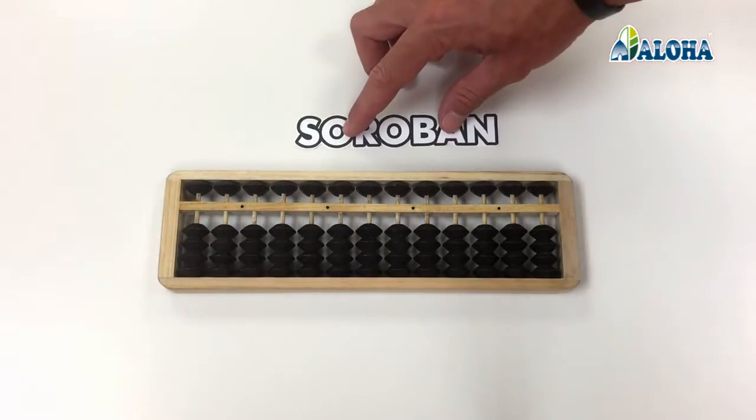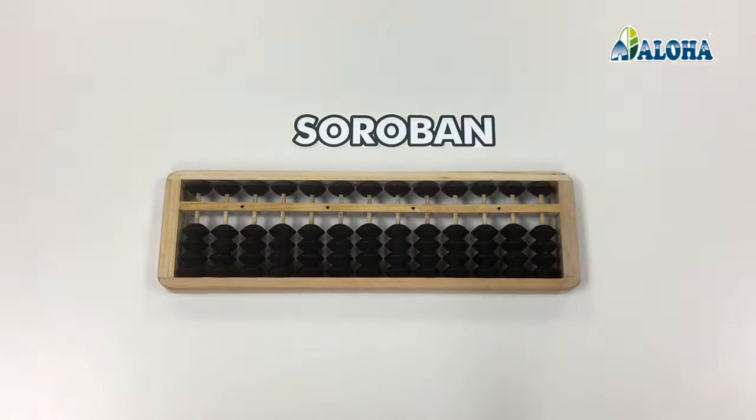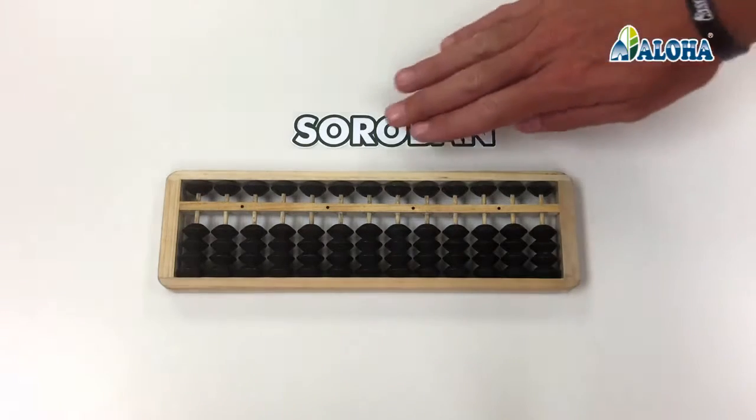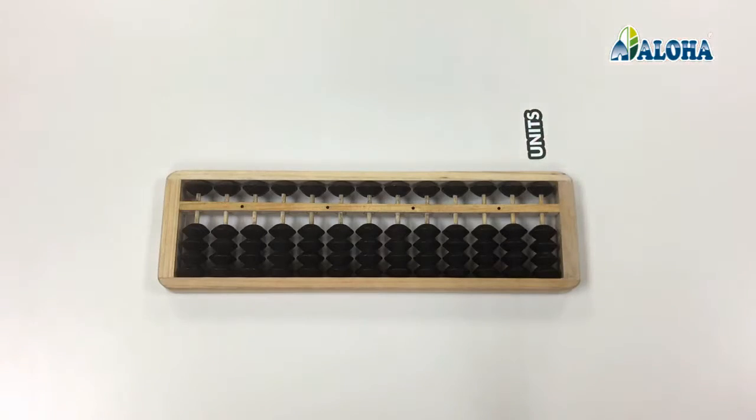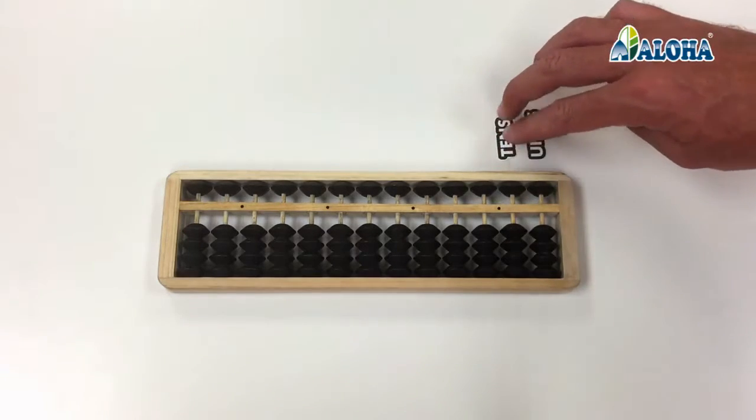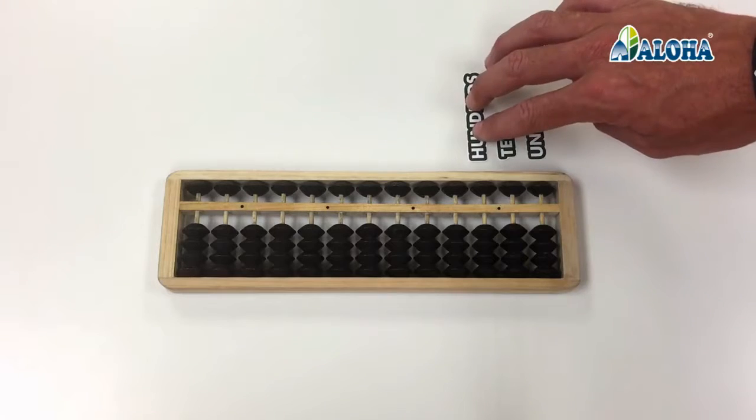The abacus is divided into columns. Each column corresponds to a numerical position. In this way, the first column represents the units, the second column represents the tens, and the third column the hundreds, and so on.